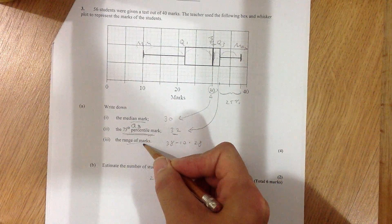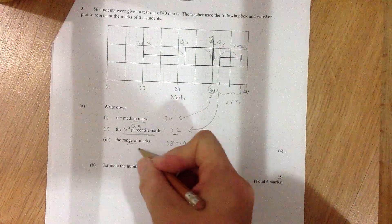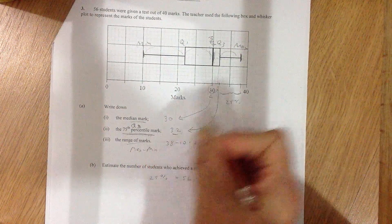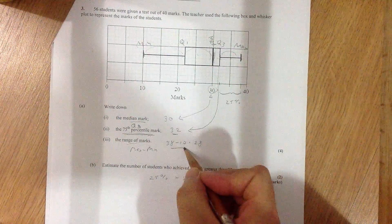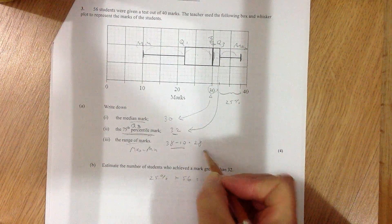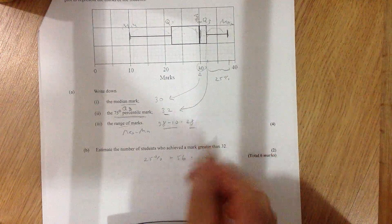The range of marks. So the range, if you remember, the range is equal to the max minus the min. And the max is 38 and the min is 10. So 38 minus 10 equals 28. So the range is 28.